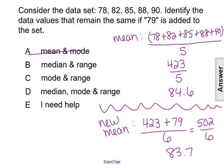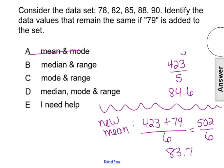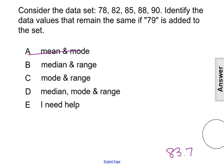Let's now talk about the mode. Remember the mode is the value that occurs the most in the data set. Currently, we have 78, 82, 85, 88, and 90. There is no mode of that data set.